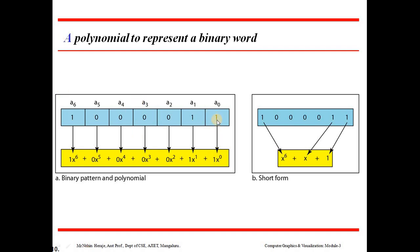We have 1 into x power 0, 1 into x power 1, 0 into x power 2, 0 into x power 3, 0 into x power 4, 0 into x power 5, and 1 into x power 6. So we have x power 6 plus x plus 1. This is the short form representation of the polynomial of the binary word.